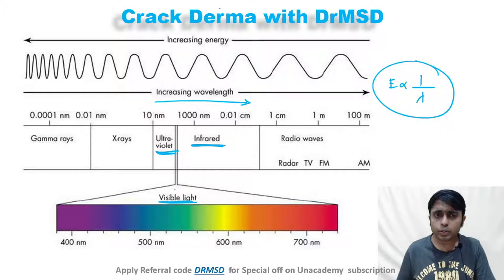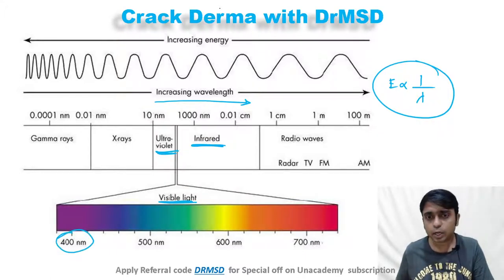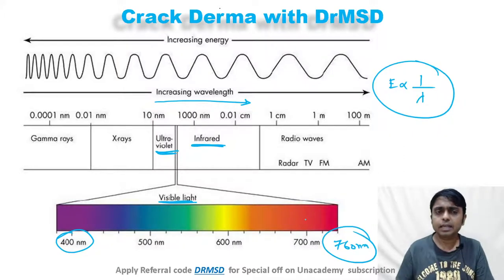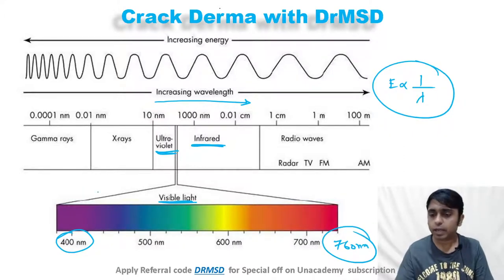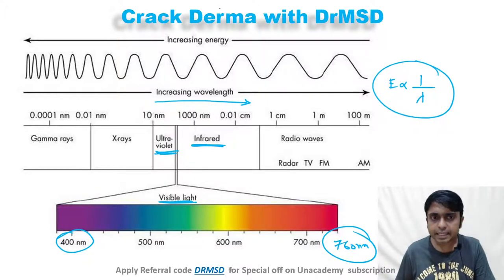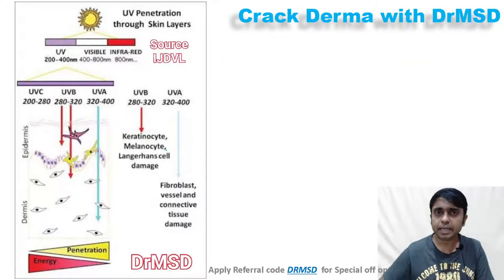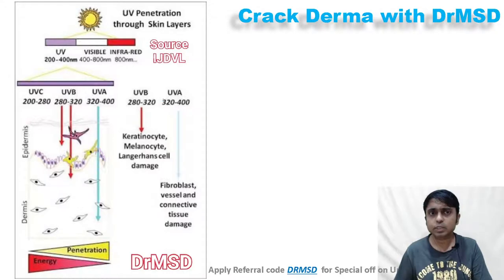Visible light ranges from 400 nanometers to precisely 760 nanometers. Now we will see about the ultraviolet rays and their characteristics.